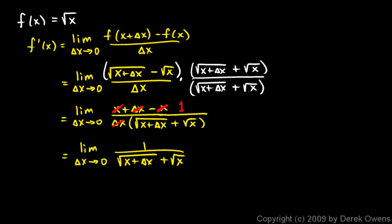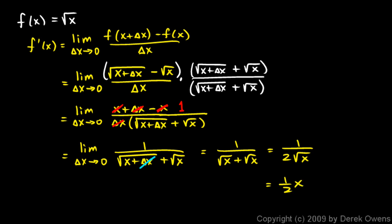And we can take the limit of this now. As delta x approaches zero, that term disappears. So we're just left with one over the square root of x plus the square root of x, which you write as one over two times the square root of x. And if you want to write the same thing in exponential form, you could write one half x to the negative one half.